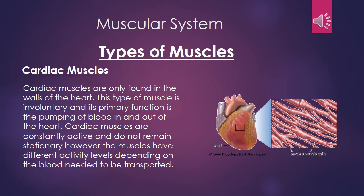The second type of muscle is the cardiac muscle. Cardiac muscles are only found in the walls of the heart. This type of muscle is involuntary and its primary function is the pumping of blood in and out of the heart.